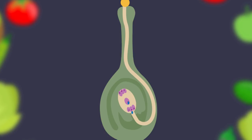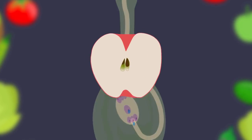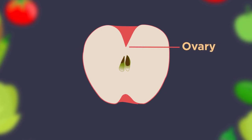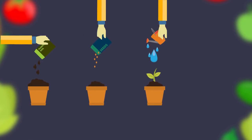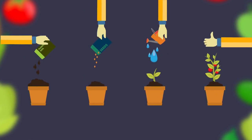The ovary enlarges and becomes a fruit, surrounding the internal seeds. The fruit and seeds are dispersed in many ways, some even by humans, where they will again grow into a new plant under the correct conditions, completing the long cycle of sexual reproduction in plants.